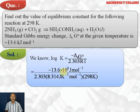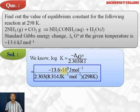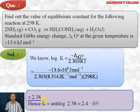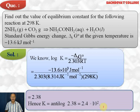Since R is in joules, delta G must be converted to joules: minus 13.6 × 10³ joules per mole. Dividing by 2.303 × 8.314 × 298, log K comes out to be 2.38. The antilog of 0.38 is 2.4, and the 2 becomes 10², so K = 2.4 × 10². The equilibrium constant is quite high, meaning the reaction proceeds strongly in the forward direction.